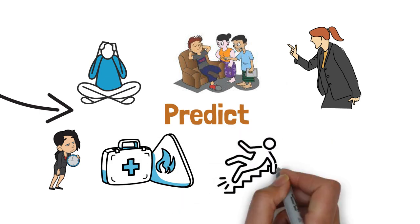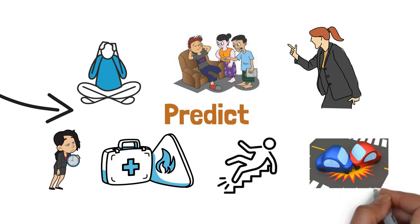So understanding what will happen is also important. Prediction plays an important role. It can help us to control the behavior.